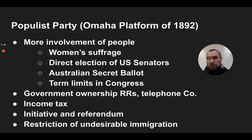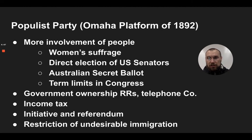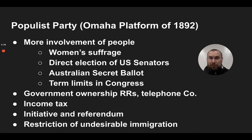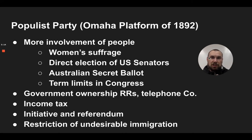At the federal level, you get the Populist Party — the People's Party — and their platform. You'll see many things that progressives would fight for in the early 1900s, from 1900 to 1920. They wanted women's suffrage, a direct election of US senators, a secret ballot, term limits in Congress, government ownership of railroads and telephone companies to control prices, income tax, and initiatives and referendums to let the people have a voice. They were also nativist in ways, wanting restrictions on what they called undesirable immigration, feeling immigrants were taking their jobs.